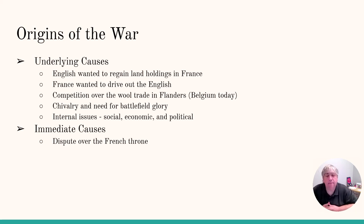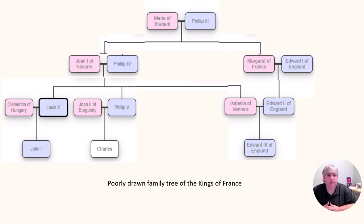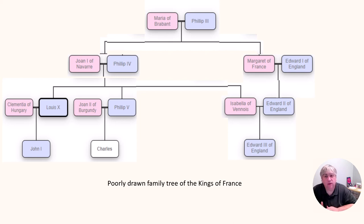As far as the immediate cause goes, it's quite simply a dispute over the French throne. Here's a very poorly drawn family tree. You've got Philip III of France. He has a kid who becomes king — Philip III dies, Philip IV becomes king. The way the French monarchy worked is the crown passed to the oldest male. It could go through the female line as well, but it was always a male. And since Philip IV was the oldest male, he got the crown.